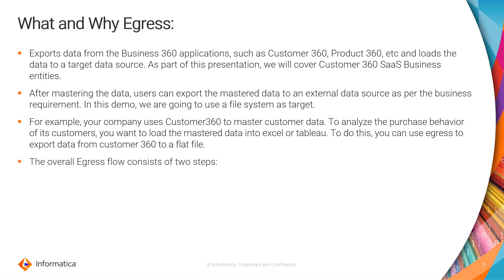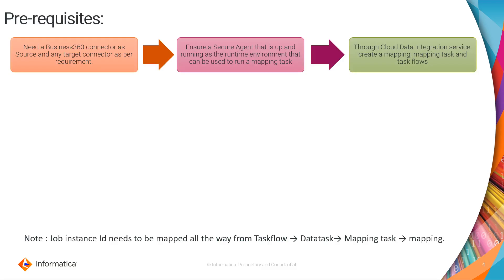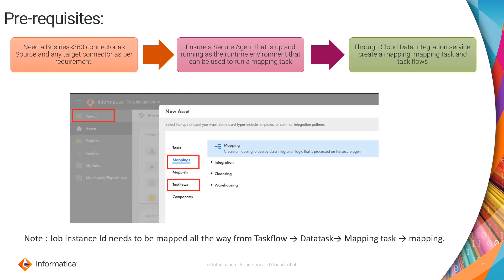This is a very common use case of how and when an egress would be used, and it consists of two steps: a stage and an extract step. For prerequisites, the very first is you need to decide upon the source and the target — here the source would be a B360 FEP connector. Next, you need to have a secure agent installed, downloaded, and up and running. The third step is you need to create your mapping and mapping task on the CDI or the data integration portion of the SaaS.